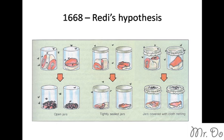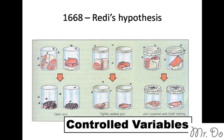In his experiment, the control variables are things that he can control — he must be able to keep them constant. For example, trying to keep the jars similar to each other, keep the temperature the same, using the same meat, and giving the same amount of time. So those are all control variables.